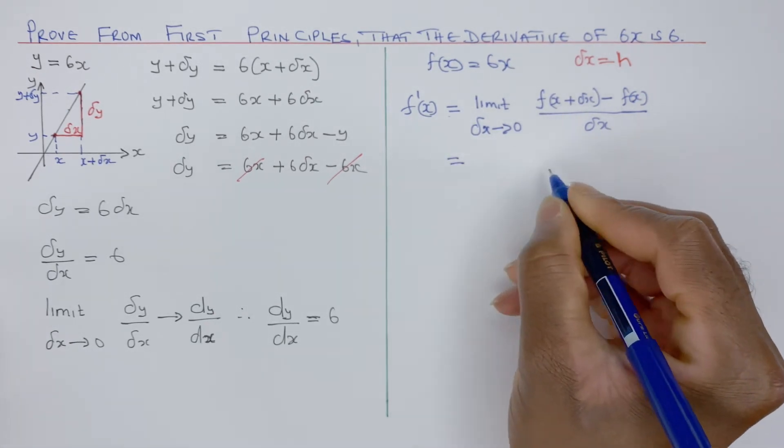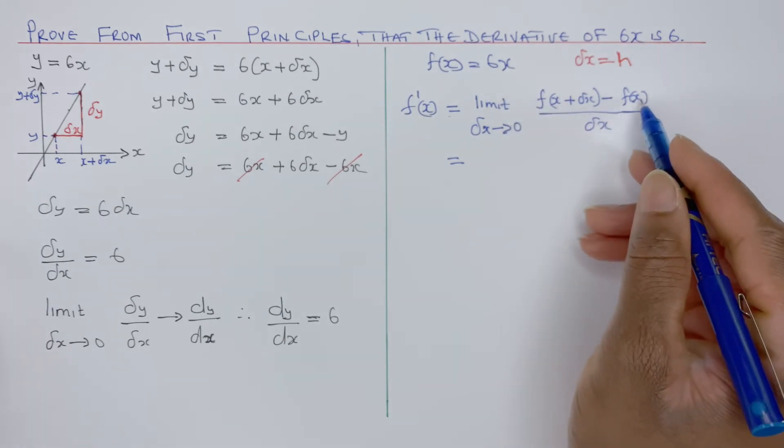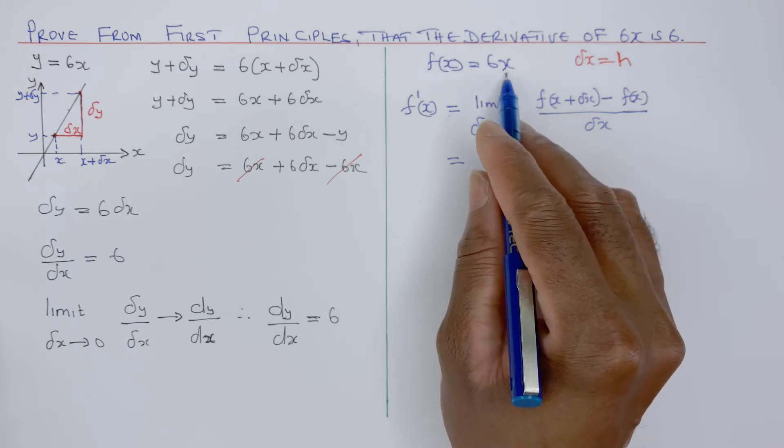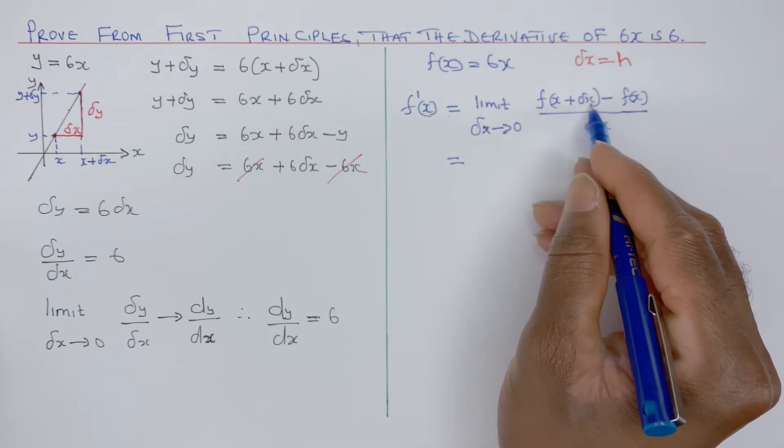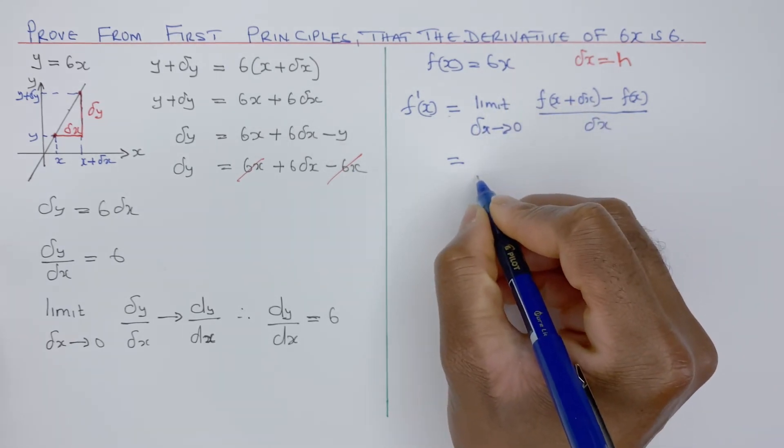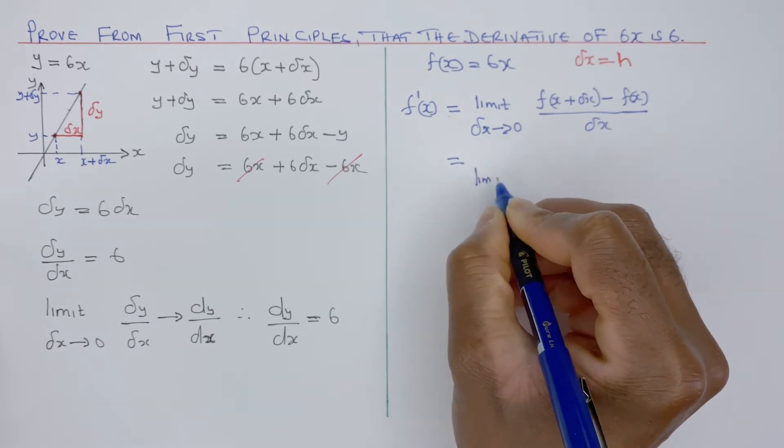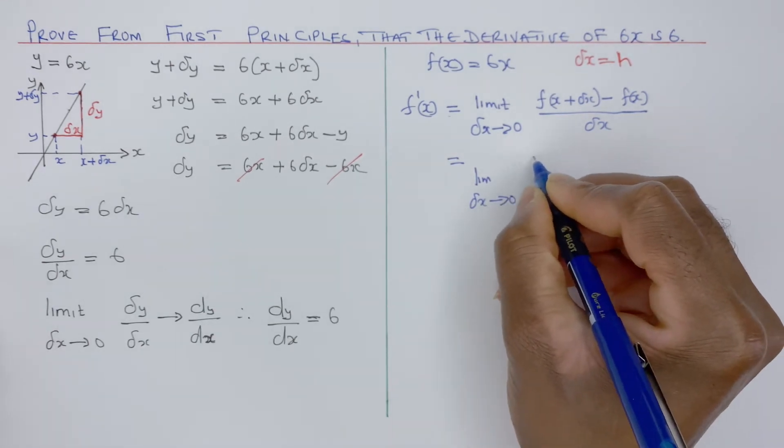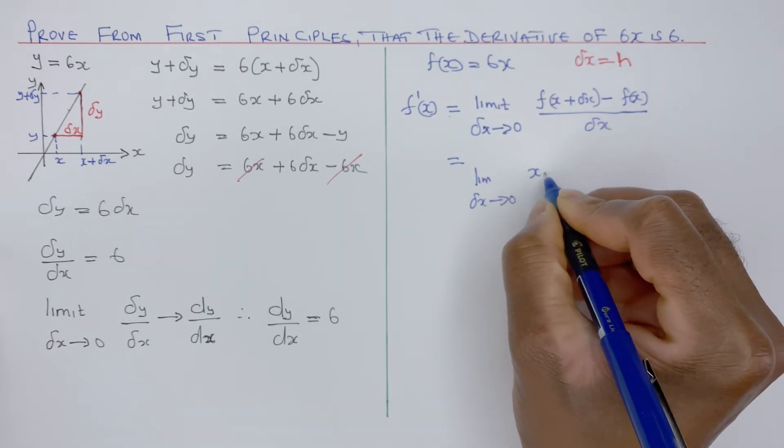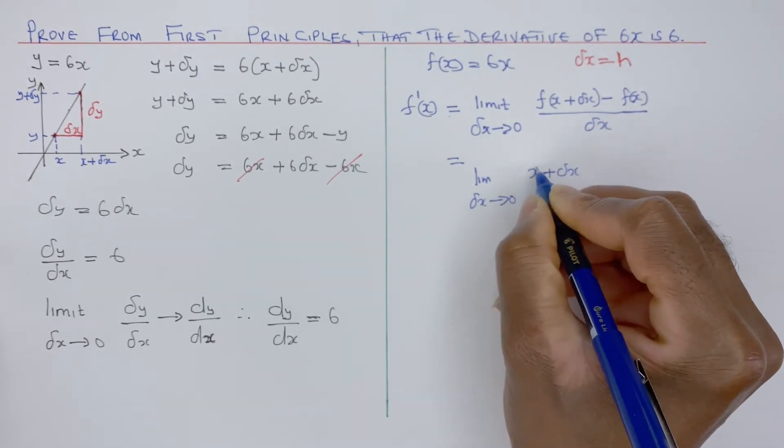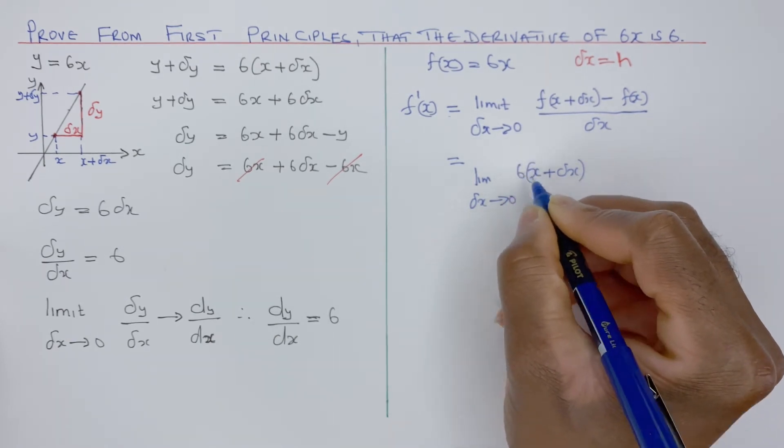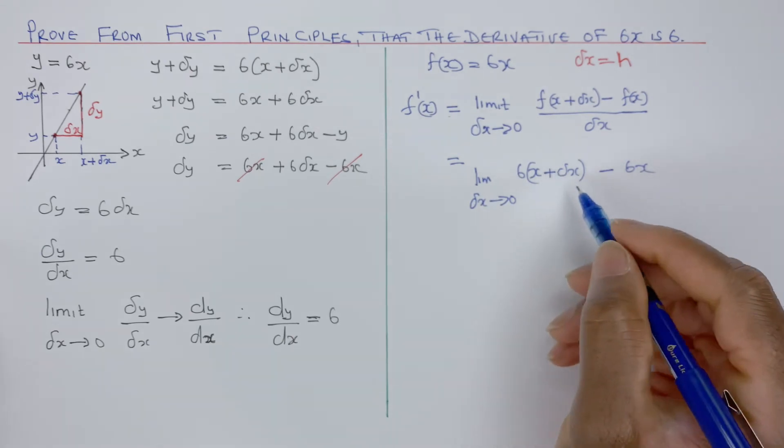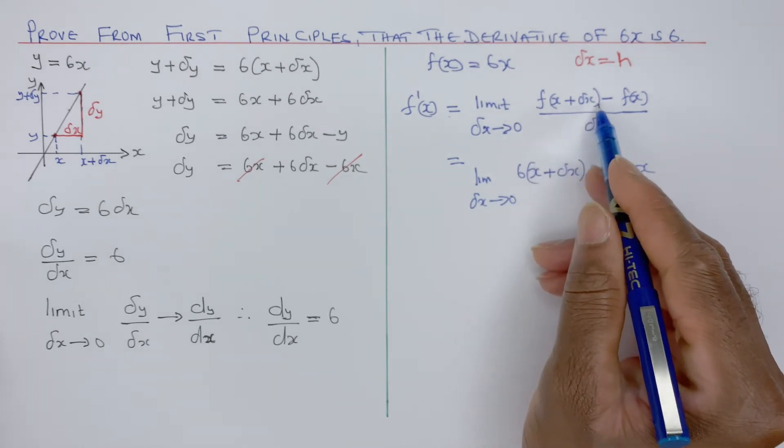And now, in this case, we have 6x, so that's 6x here for f of x. And then we need to replace x with x plus delta x. So we still have to say, in the limit, where delta x tends to 0, 6 times x plus delta x, put the bracket, minus 6x.